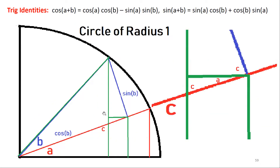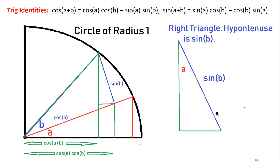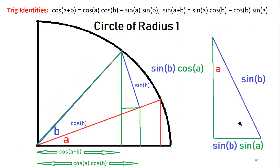Using these right triangles, cosine of A+B equals the base of the green triangle: cos B · cos A minus sin A · sin B. And sin(A+B) is obtained similarly. This proves the angle addition formula. It's just a careful collection of results from the auxiliary triangle construction.